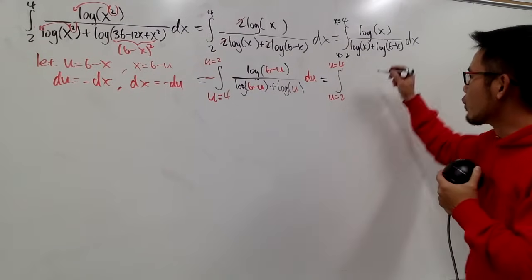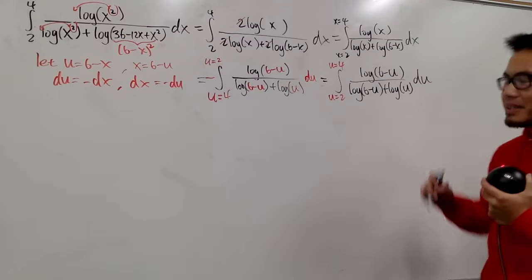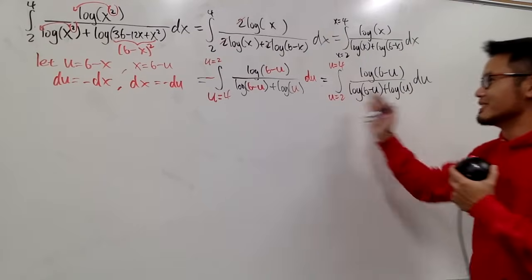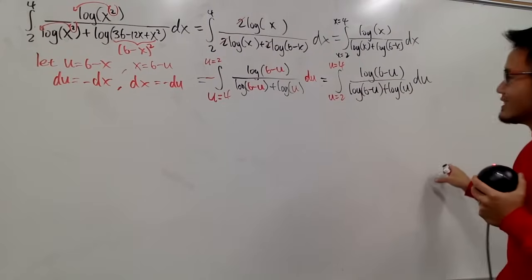So I will just write this down right here. This is still the du. Now I will just flip this: u will be going from 2 to 4, and now this will be a positive integral now because we make use of this negative already. Anyway, the integral of course will stay the same.